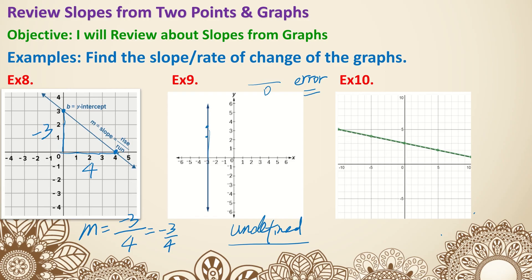Example 10. Two points — going down, that's a negative 1. Then horizontally going 1, 2, 3, 4, 5 to the right — that's a positive 5. Negative 1 over 5 simplifies to negative one-fifth. That is the last example for this slope review. Thank you.